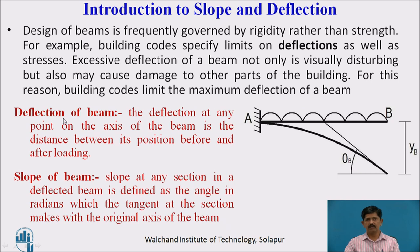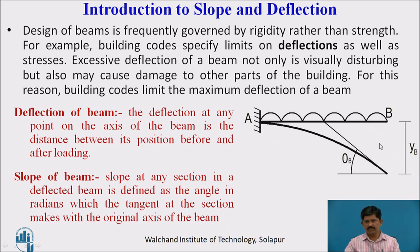The deflection at any point on the axis of the beam is the distance between its position before and after bending. This is a cantilever beam — it is straight, and when the load is applied, the beam bends. The deflection is greatest at the free end and decreases toward the fixed end.